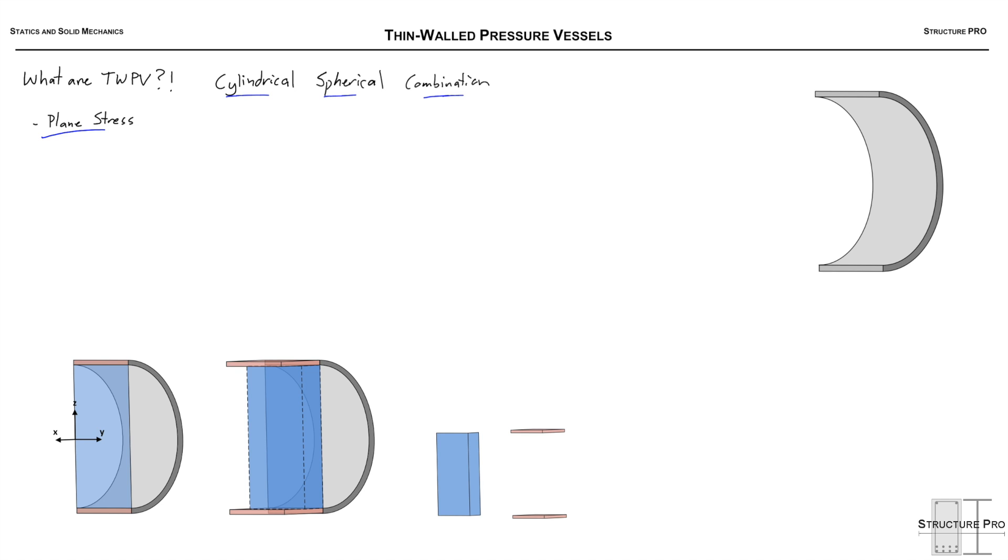There's three types: cylindrical, spherical, and a combination of them. Some examples: maybe a can of pop if it's shaking, that's how we get the pressure in there. Maybe a basketball, or more commonly a propane tank. Those big sausages you see. Aerosol cans as well, hot water tanks, fire extinguishers.